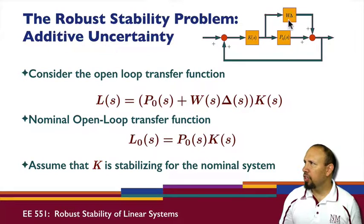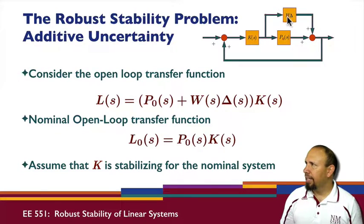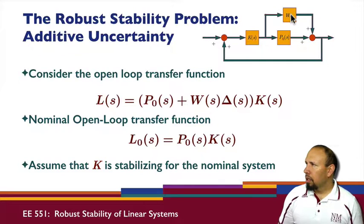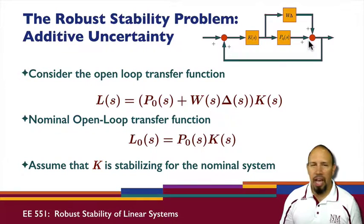In terms of uncertainty, for the additive uncertainty problem, we have our nominal plant and then our uncertainty that appears, and the two are in parallel with each other. Notice that if delta is equal to zero, this uncertainty is basically zero and we end up with just the nominal plant.